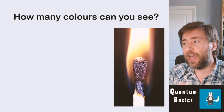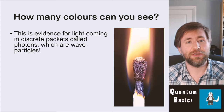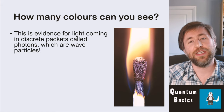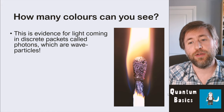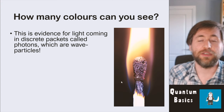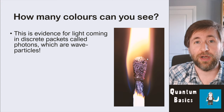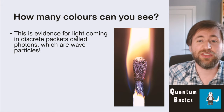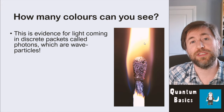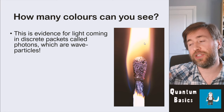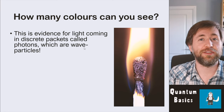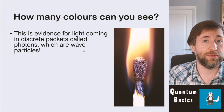Look at this match head. How many different colours can you see? You can probably see a few, but you certainly can't see a continuous spectrum. The hottest parts of the flame are the blue parts and the coolest parts are the yellow or red, but you can't see any green. We can see some blue, some orange, and some red — we cannot see a continuous change. This is evidence for light coming in discrete packets, or quanta.